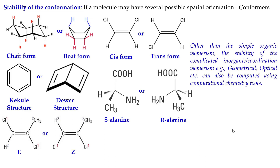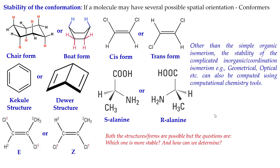Other than simple organic isomerism, there are many complicated isomerisms — such as inorganic or coordination isomers, geometrical isomers, and optical isomers — all of which can be computed using computational chemistry tools. Both structures like the chair form and boat form may be available, but the question is which one is more stable, and how can we determine that stability.